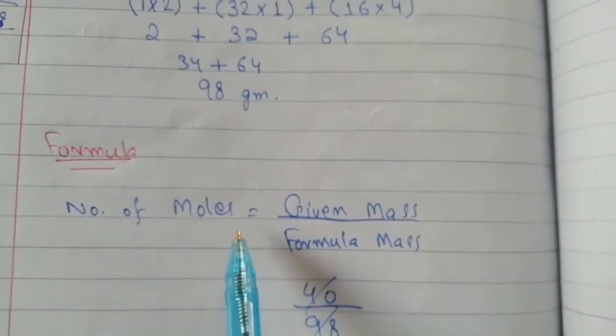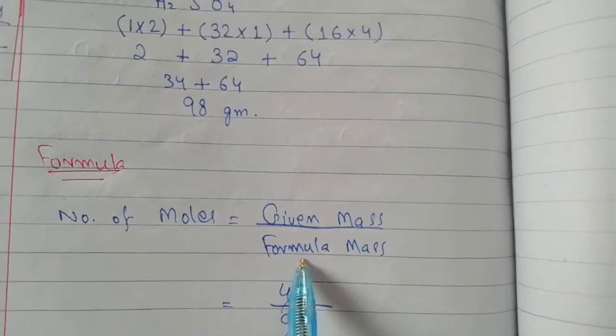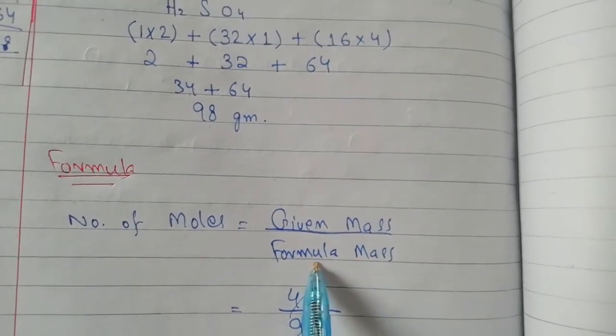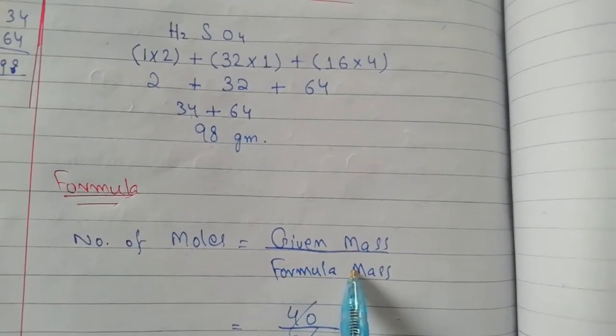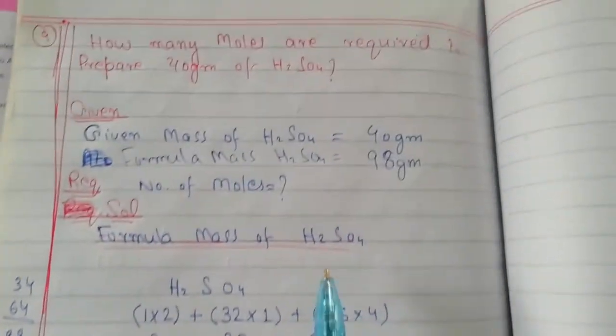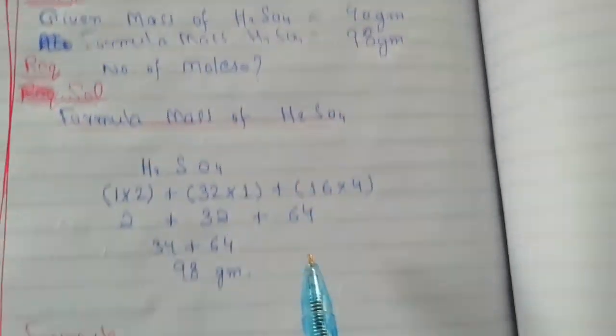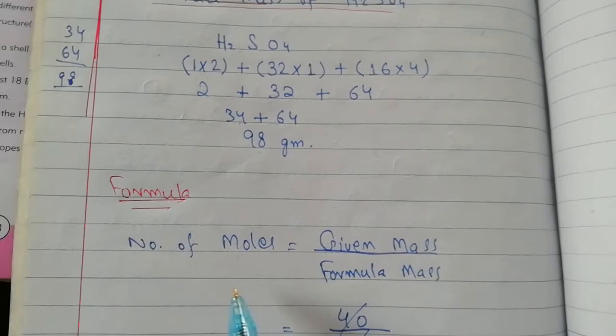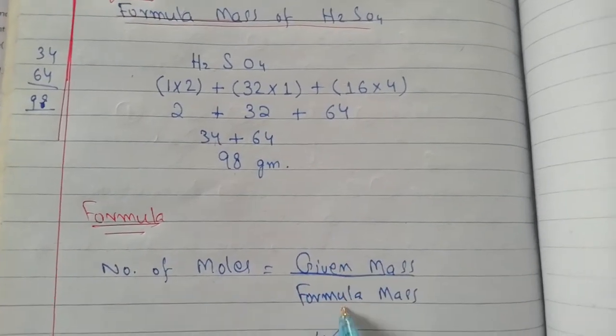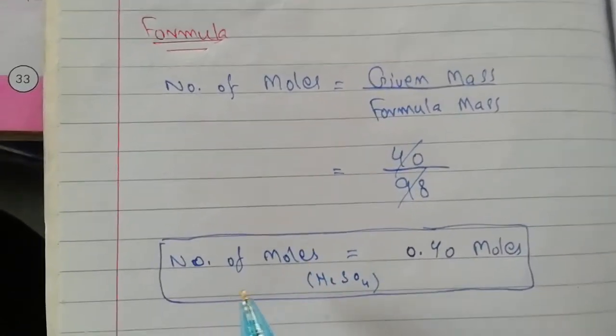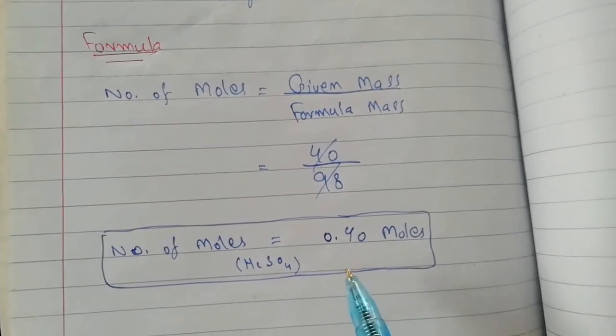Number of moles formula is given mass of substance upon atomic mass or molecular mass. If the compound element is there, then number of moles is given mass upon formula mass. This way we find number of moles.